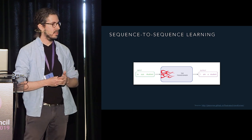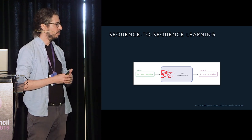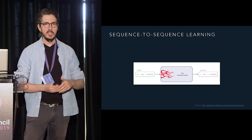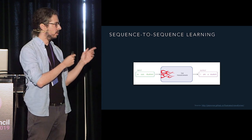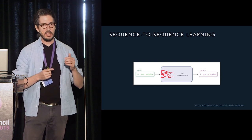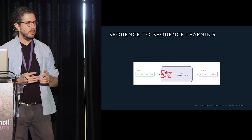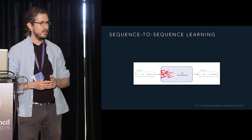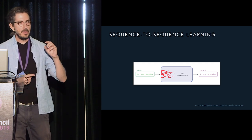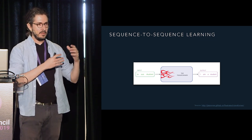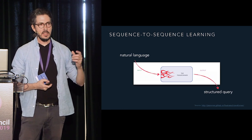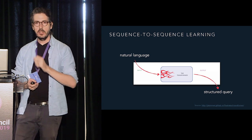Ever since the transformer was introduced, it's been at the bottom of all recent breakthroughs in natural language processing. Basically every time you read about a state-of-the-art result, chances are very good the transformer is at the core. It's at the core of Google BERT, and also OpenAI's GPT-2 — a model deemed too dangerous to release for quite a while. My thinking was: maybe I can use this very powerful method to simply learn a mapping from natural language to a structured search query.